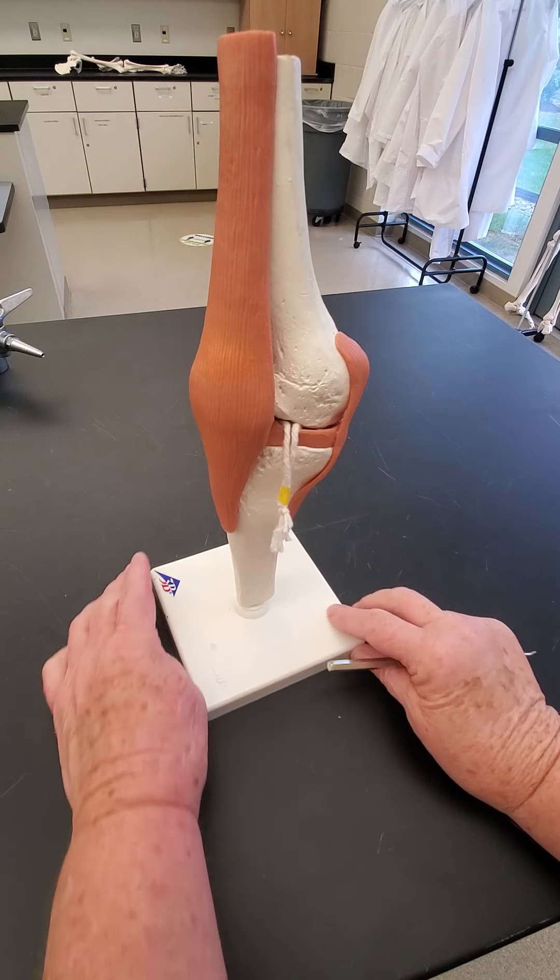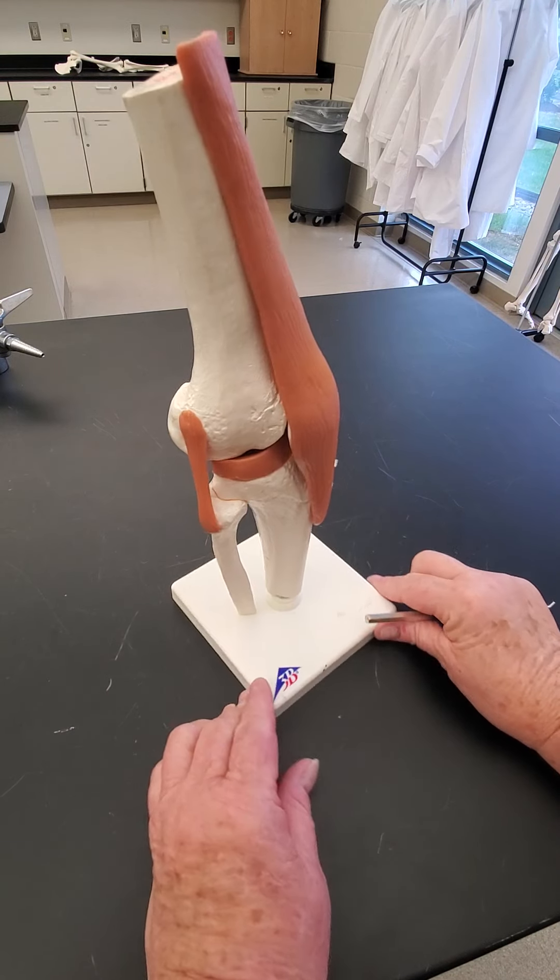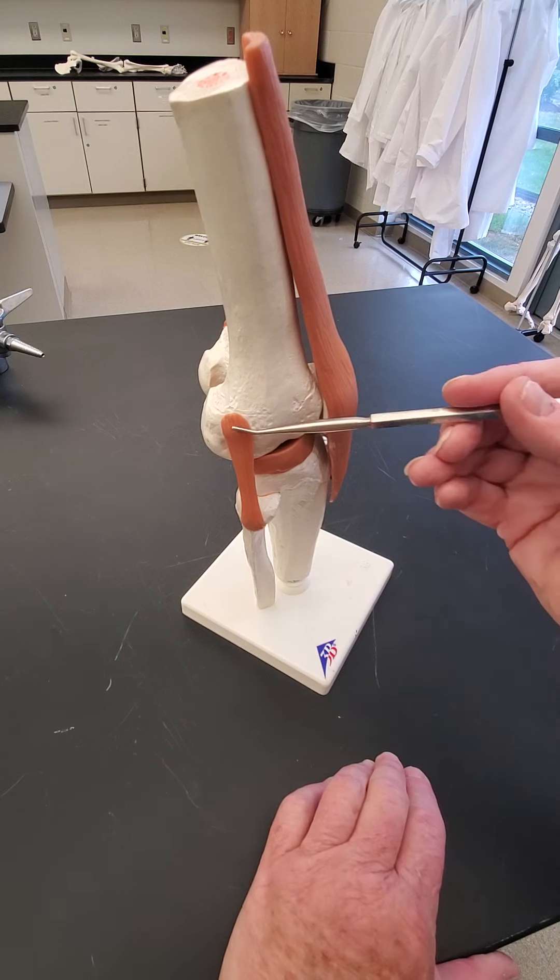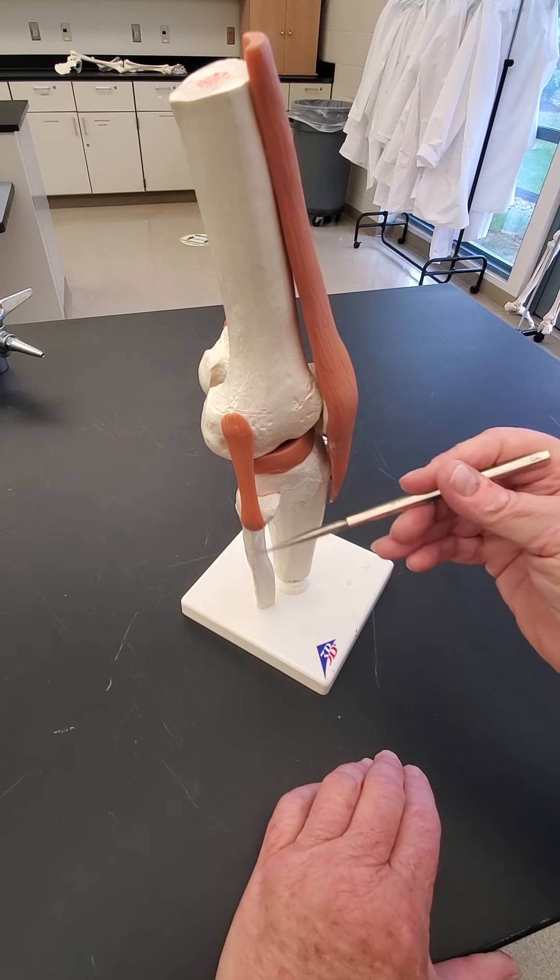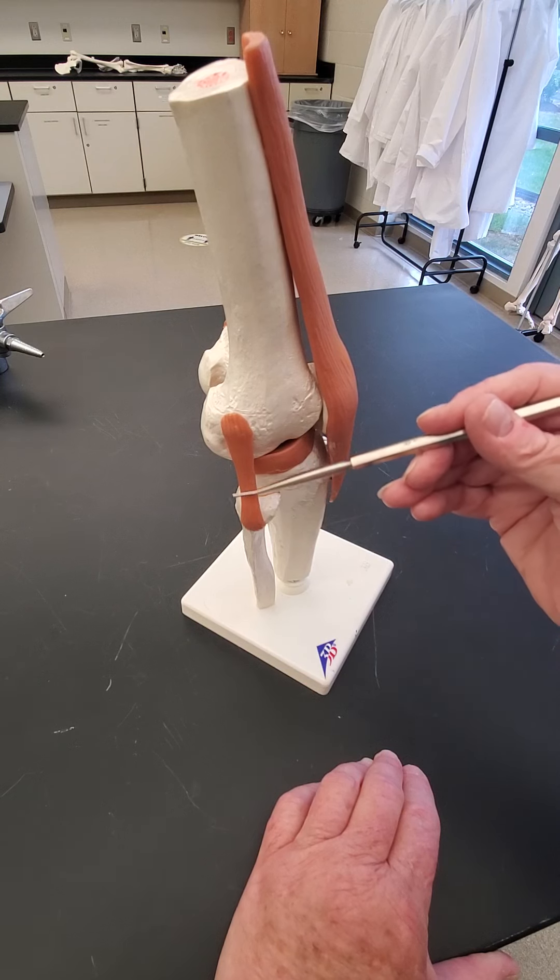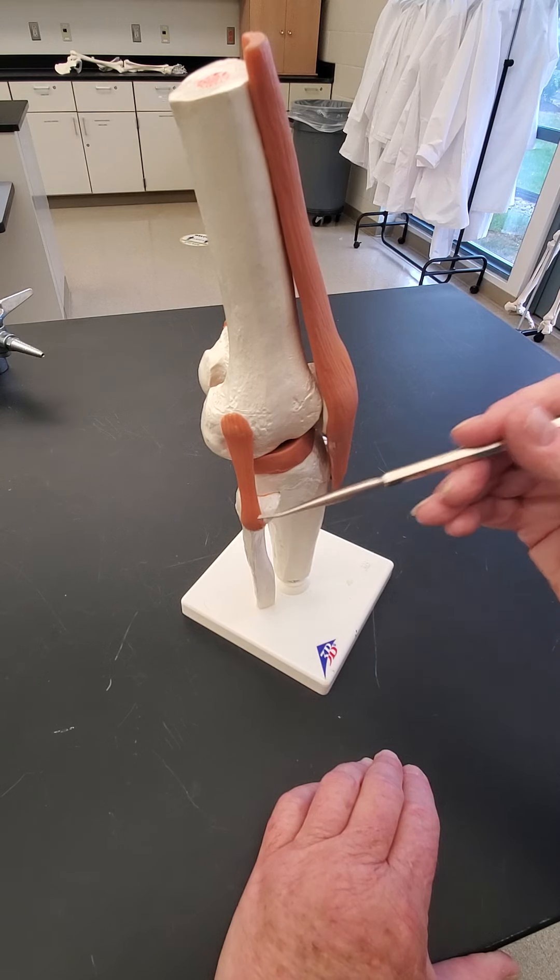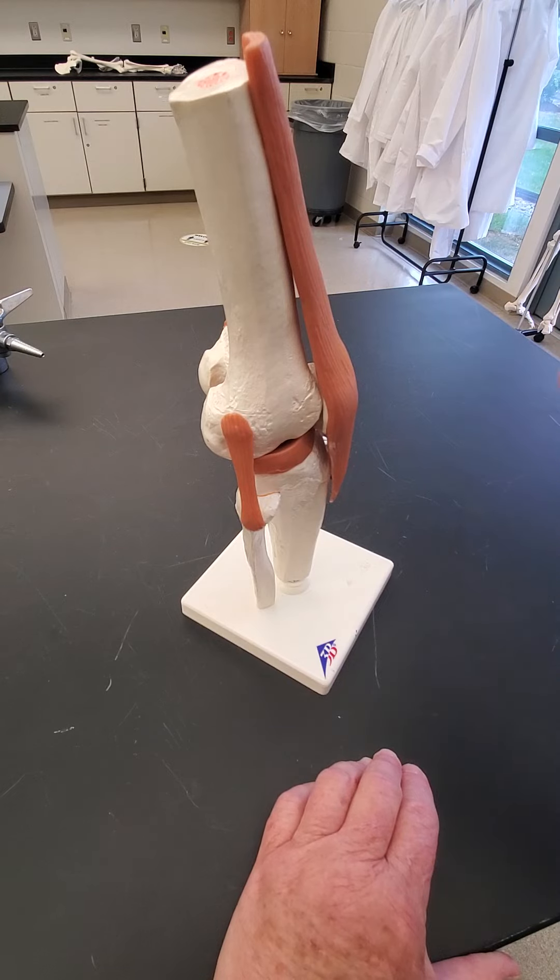And then on the other side is your lateral collateral ligament, which is on the same side as the fibula, because fibulas are lateral. So these are ligaments that are outside of the joint capsule.